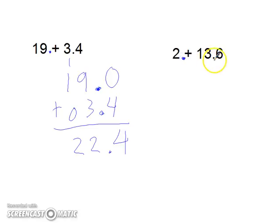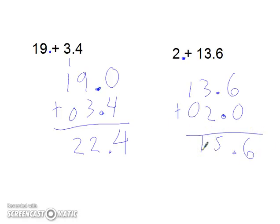So now I see this number 13.6 is bigger so I'm going to put it on top. 2 with my decimal point. Missing the 0 there and the 0 there. Add them up. Nice and easy.